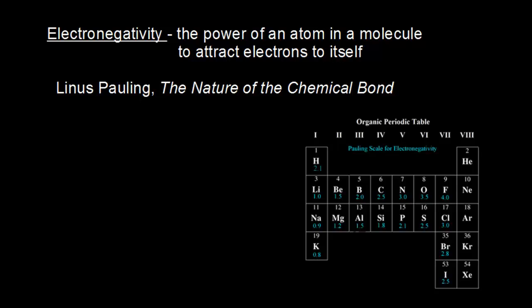Electronegativity is probably the most important concept to understand in organic chemistry. We're going to use a definition that Linus Pauling gives in his book, The Nature of the Chemical Bond. Pauling says that electronegativity refers to the power of an atom in a molecule to attract electrons to itself.